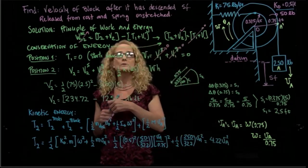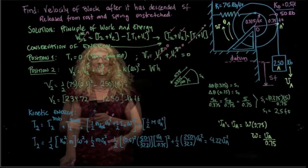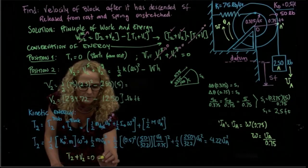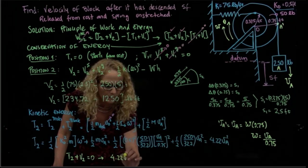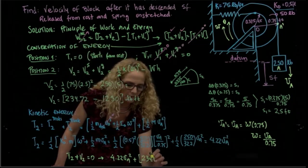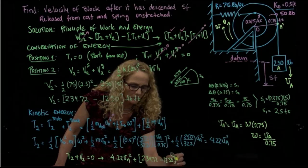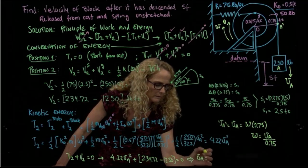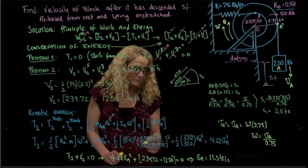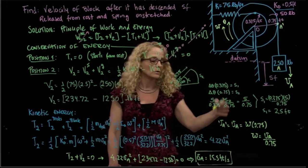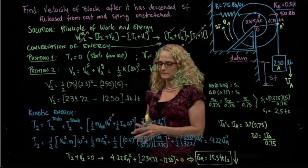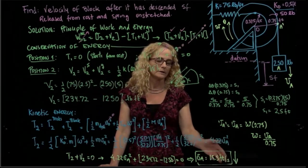Finally, applying conservation of energy — T2 plus V2 equals zero — we have 4.22 V_A squared plus 234.72 minus 250 equals zero. Solving, the velocity of A equals 15.5 feet per second. The direction is downward, since the block descended five feet, so as a vector it would be in the negative J direction.